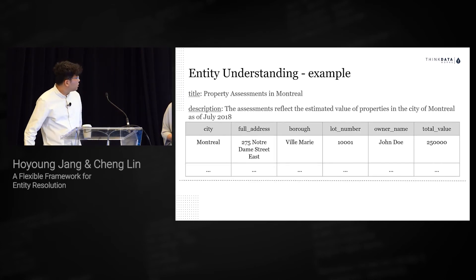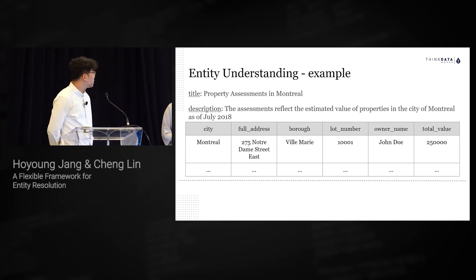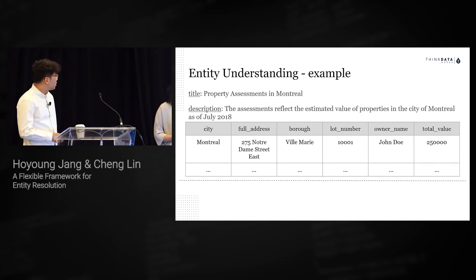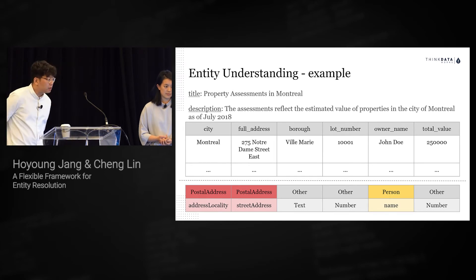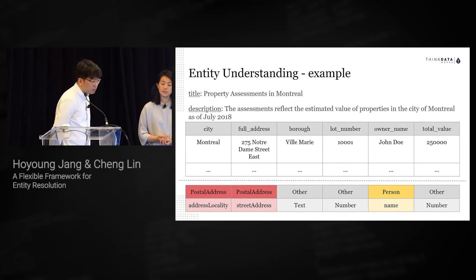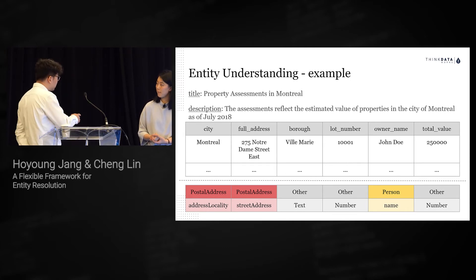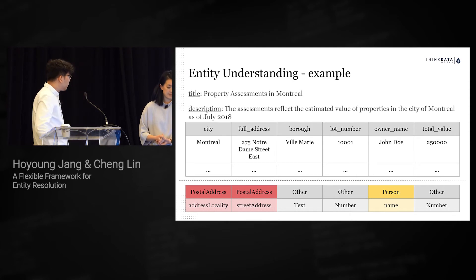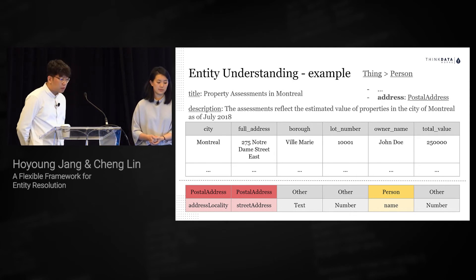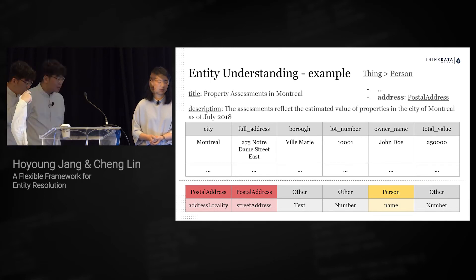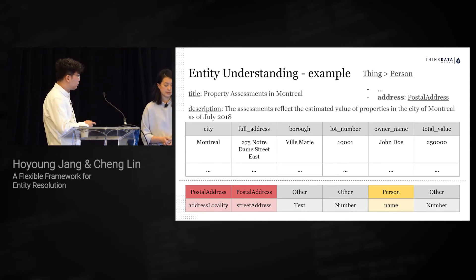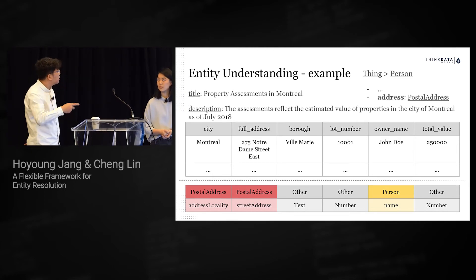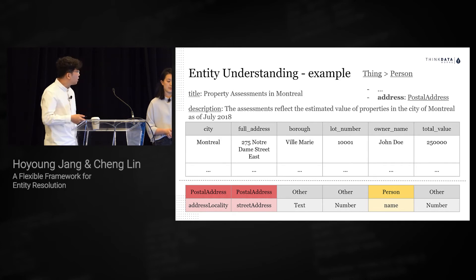Here's an example of entity understanding on a data set. For each data set, we're given unstructured data such as title and description, together with structured data like column names and sample rows. We want to predict its entity type and the relevant property mapped onto each column attribute. For example, 'city' is predicted as a postal address with property 'address locality.' If multiple entities are found from a data set, we additionally have to predict the relationship between them — such as between postal address and person — and based on the schema, the property would be 'address.'